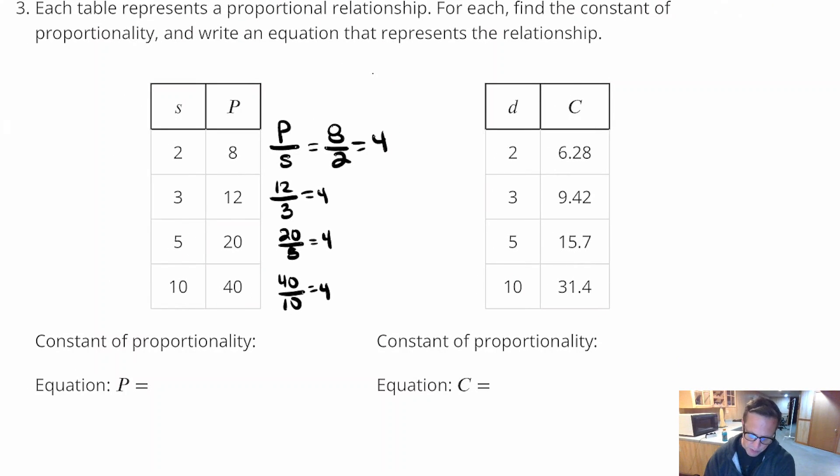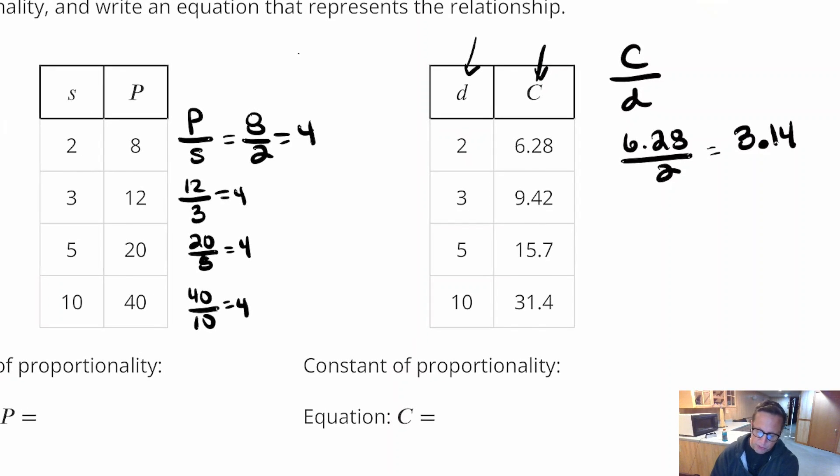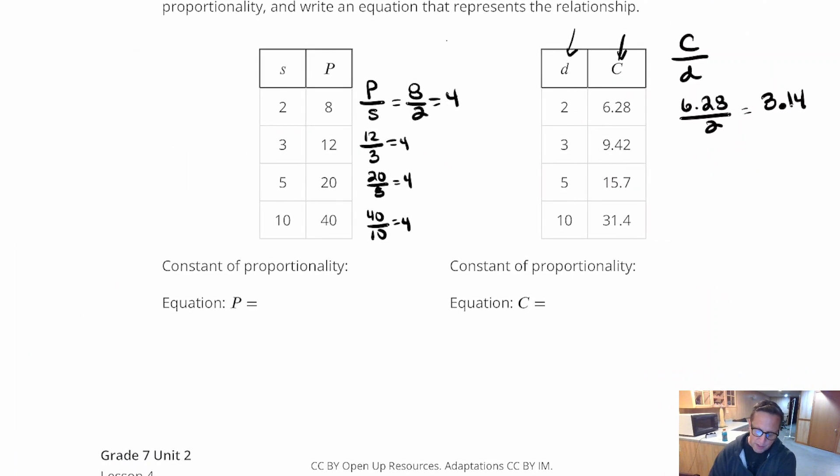Alright. So this one right here, in the next one, we're going to do C divided by D. So we're going to do 6.28 divided by 2, which is 3.14. That looks like pi. Oh, and that's kind of interesting. Circumference. Diameter. Alright. So there's a definite relationship there between circumference and diameter.